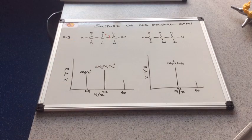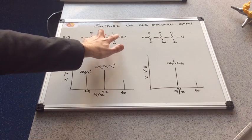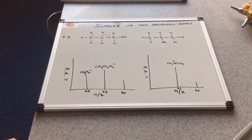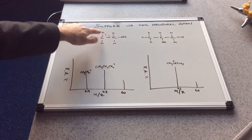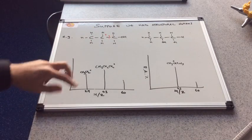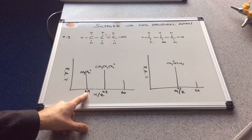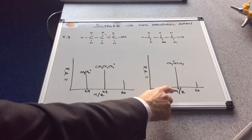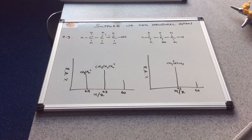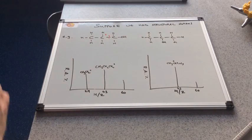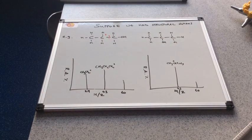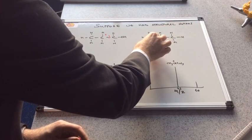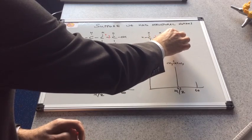I've fragmented propan-1-ol slightly differently now. I'm fragmented between the two carbons here. I'm putting the positive charge on this left-hand side piece. So that would be a CH3, CH2 plus fragment. That's an ethyl group. That's got a mass of 29 from those two carbons and five hydrogens. Is it possible to make a fragment with a mass of 29 from propan-2-ol? Let's just have a look. If we fragment here, we've got 15. Or if the positive charge went there, that would be 45.